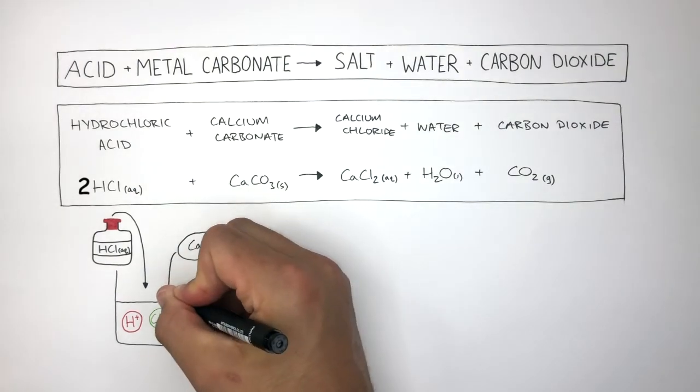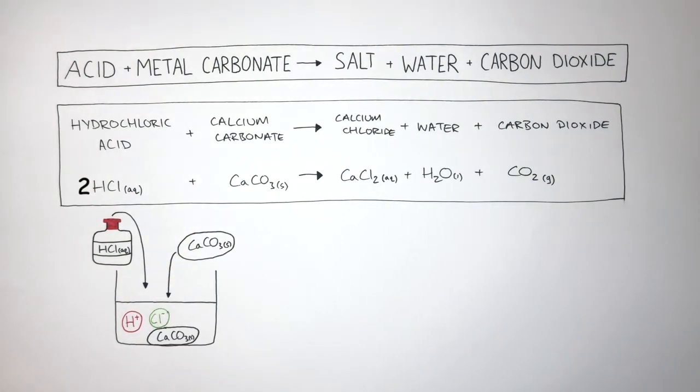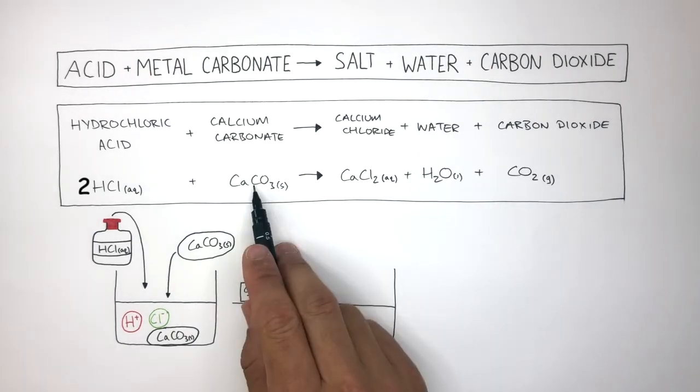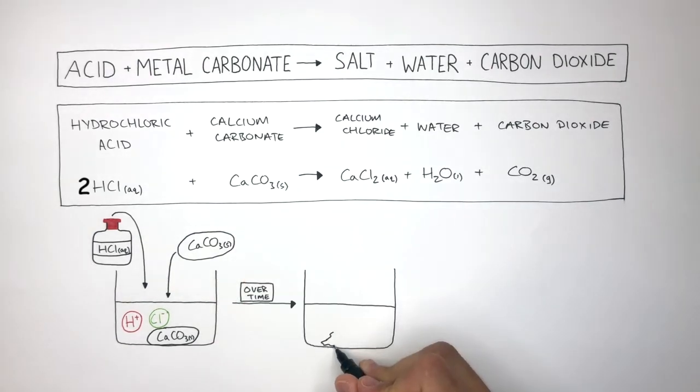If we then place the calcium carbonate into the hydrochloric acid, over time what happens is the calcium carbonate reacts with the hydrochloric acid. This diagram shows how the mass of the calcium carbonate has decreased as the outer surface has reacted.